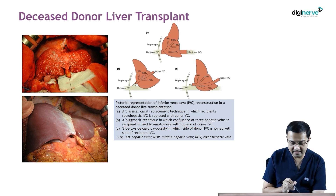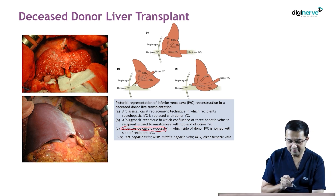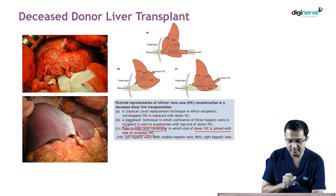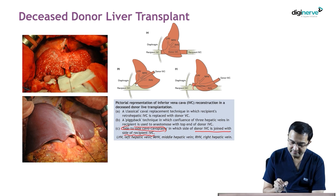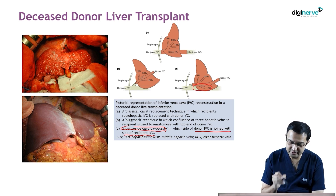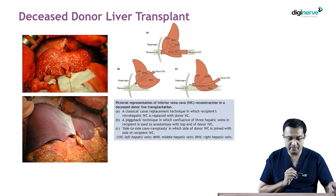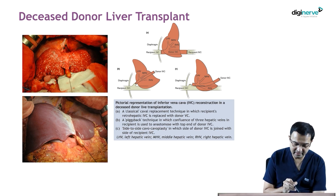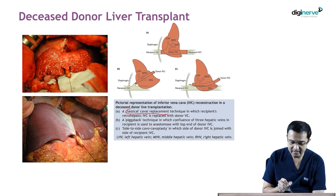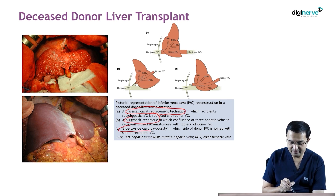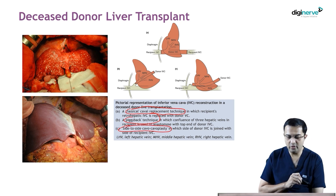The third method is side-to-side cavoplasty, in which the donor IVC is joined to the side of the recipient IVC. You can appreciate here that the donor IVC has been joined to the recipient IVC by side-to-side cavoplasty. So remember, there are three methods of IVC reconstruction: the classical caval replacement technique, piggyback technique, and side-to-side cavoplasty.